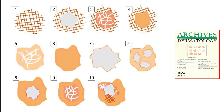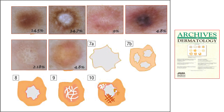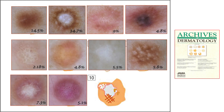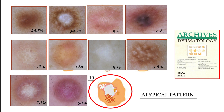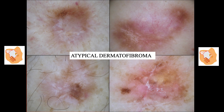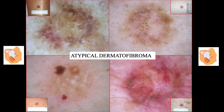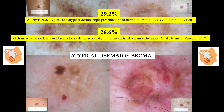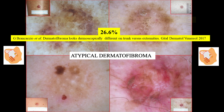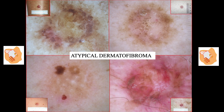In this slide we can see all the schematics of dermatofibromas, and we have reviewed most of them in this talk. Finally, there are lesions that show an atypical pattern, including those cases with atypical or irregularly distributed structures, as we can see in this other slide. Here we have four more examples of atypical dermatofibromas, which were found in 6% of all dermatofibromas in the study. Several authors have even observed higher percentages of atypical dermatofibromas.